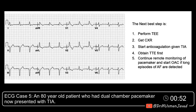Patient who underwent a dual chamber pacemaker implant for high-grade AV block two months prior to presentation. She's now hospitalized for a TIA. Cardiology has consulted for consideration of a TEE and a pacemaker evaluation for subclinical AF. Patient denied any palpitations, however has been told that she has an irregular heartbeat.